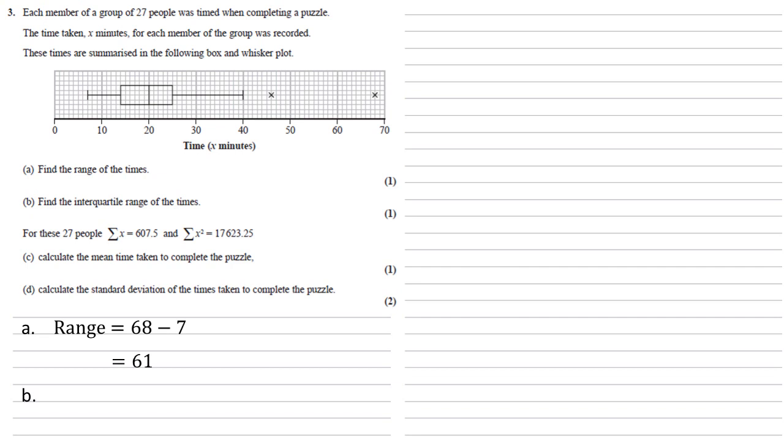And for part B, we need to find the interquartile range of the times. For this, we need to find the upper and lower quartiles. These are the two edges of the box. The upper quartile is the right hand edge of the box at 25. The lower quartile is the left hand edge of the box at 14. So the interquartile range is 25 minus 14, which is 11.